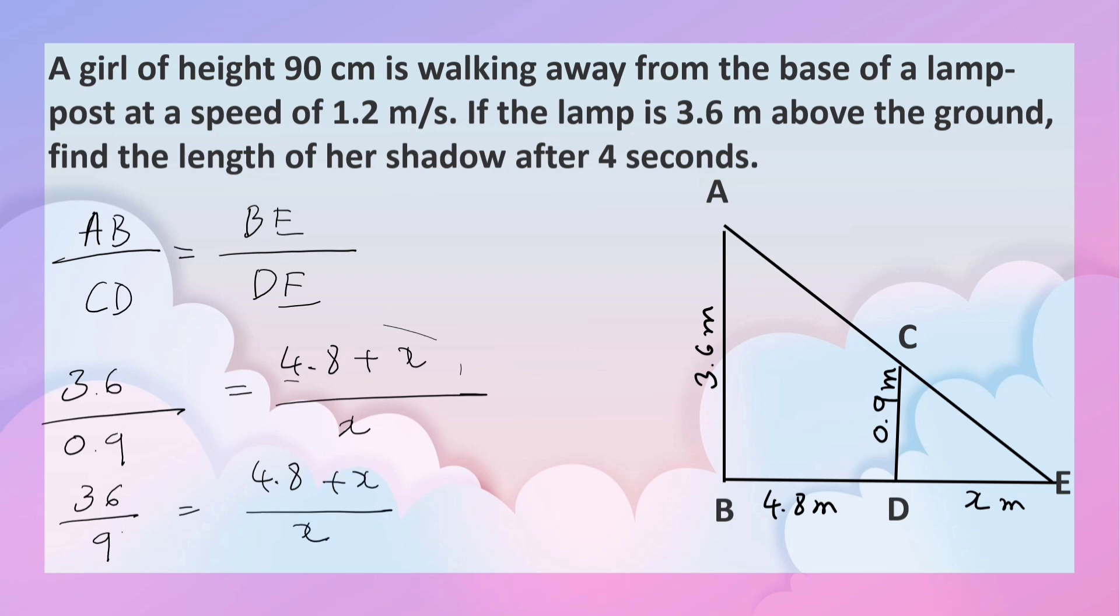Here now we can simplify. 36 by 9 is 4. So now cross multiply. 4X equals 4.8 plus X. Now it is clear, isn't it? How to solve for X? 4X minus X equals 4.8.